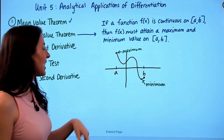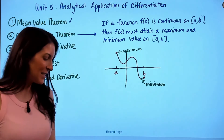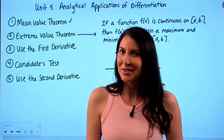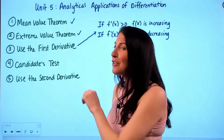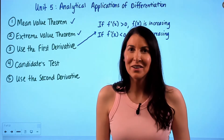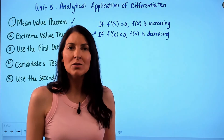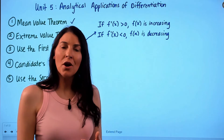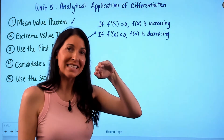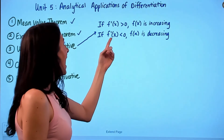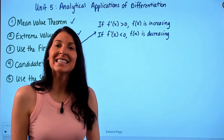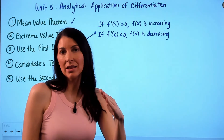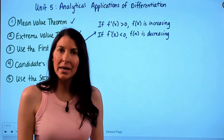That completes the second existence theorem. There is also a third: the Intermediate Value Theorem, which I've covered in a previous video. Next is everything you need to know about the first derivative f'(x). The first derivative tells you about the slope of f(x). If f'(x) > 0, then f(x) is increasing. Conversely, if f'(x) < 0, then f(x) is decreasing, because the slope of the tangent line is negative.